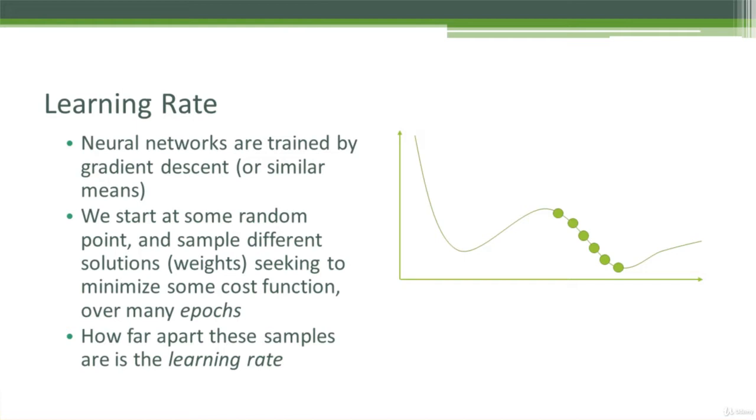At each epoch, we try a different set of weights on our neural network, trying to minimize some cost function, which might be the overall accuracy of how well it makes predictions on our validation set.